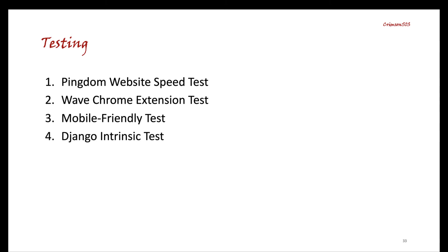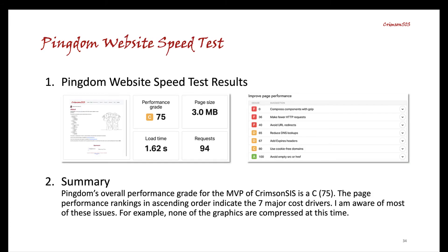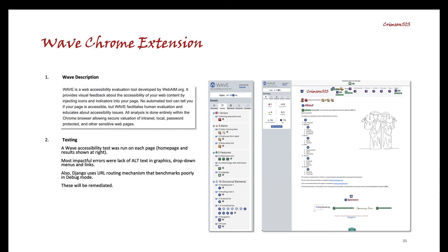For testing, I employed several industry standard tools: Pingdom website speed, Wave Chrome extension, mobile-friendly, and Django intrinsic tests. This iteration of the application rated a C or 75 on the Pingdom website speed test for reasons I'd anticipated. Most of the graphics are uncompressed, which I'm attending to. Django uses intrinsic URL routing, however, so I'm researching strategies to optimize performance — predictably the test rated poorly on this metric. The Wave Chrome extension provided useful feedback on accessibility. A number of elements lacked alt tags for screen readers, and I've cleaned up most of those.